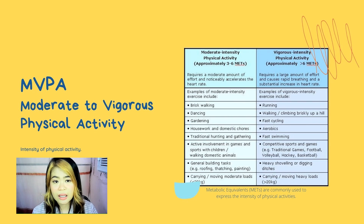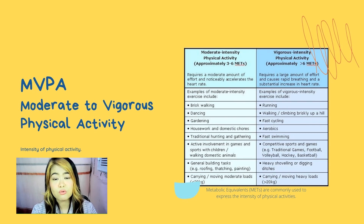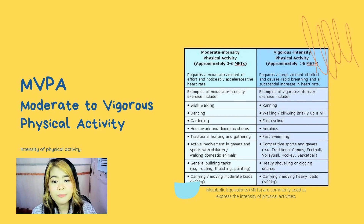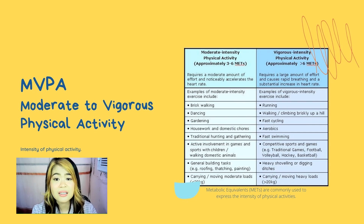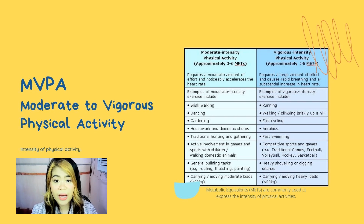Take a look at this table. Metabolic equivalents or METs are commonly used to express the intensity of physical activity — that is one way of measuring the intensity of an activity. MET is the ratio of a person's working metabolic rate relative to their resting metabolic rate. Metabolic rate is the rate of energy expended per unit of time, and it's one way to describe the intensity of an exercise or activity.